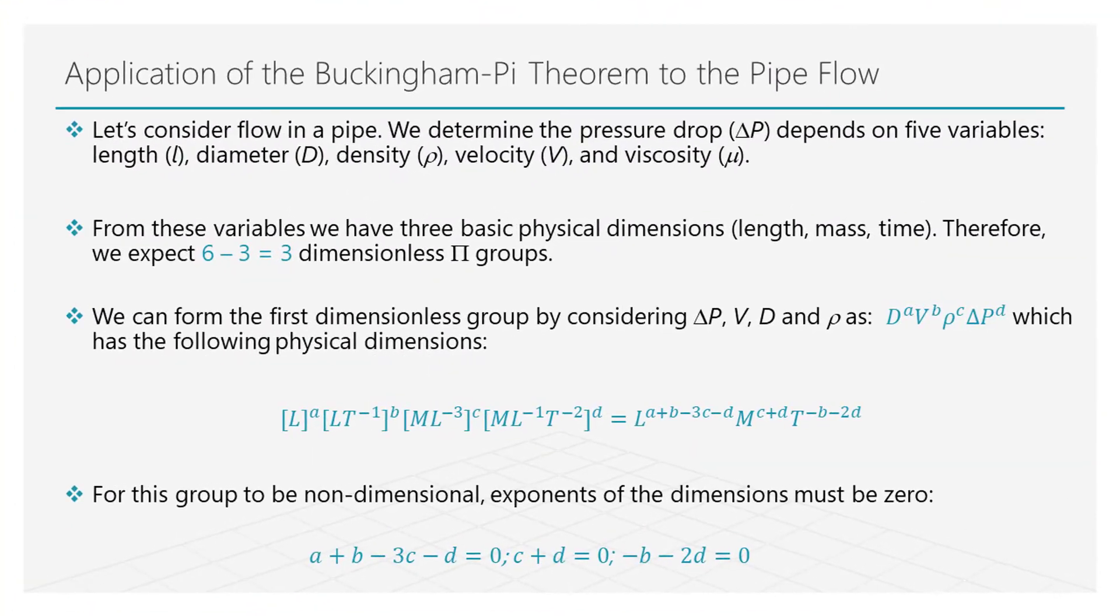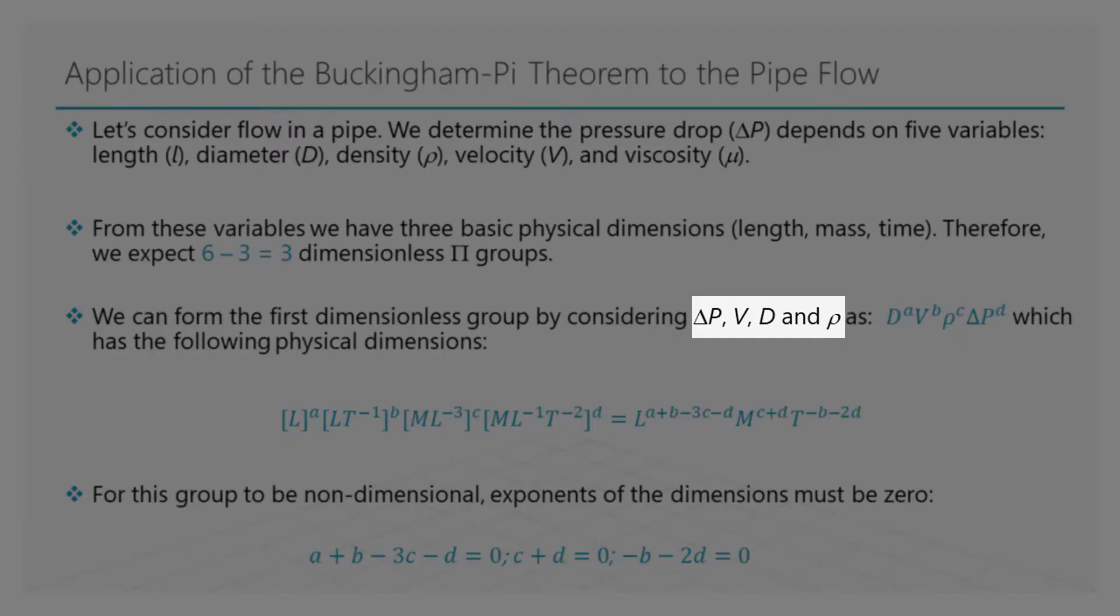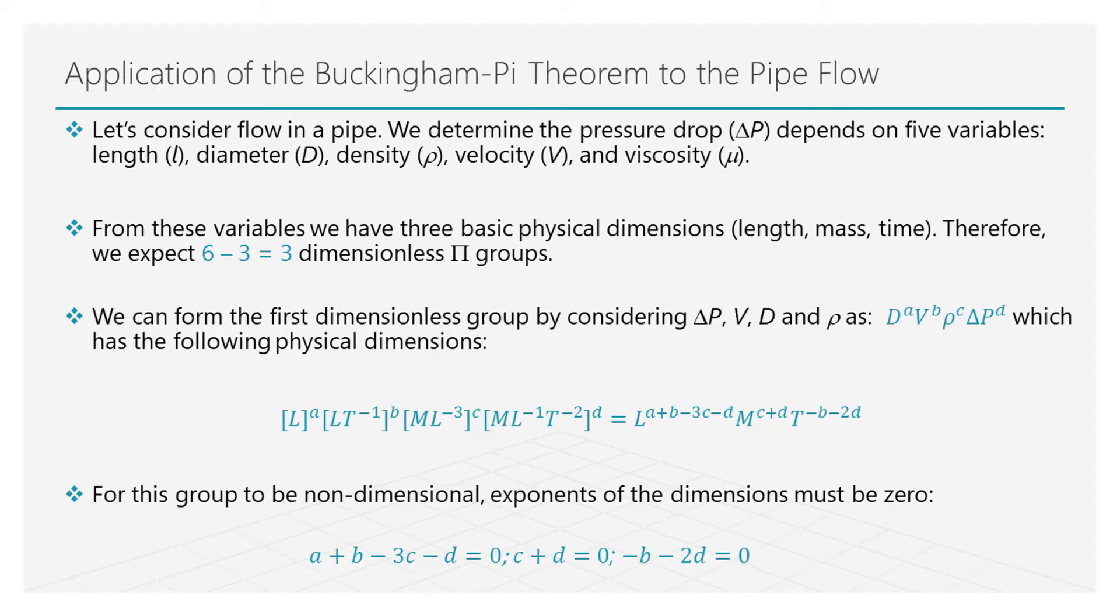Let's start with the first one. We set the diameter, the velocity and the density as repeating quantities. And the first non-repeating quantity will be the pressure drop. The first pi parameter is a function of these four variables, and we can express it in this form.